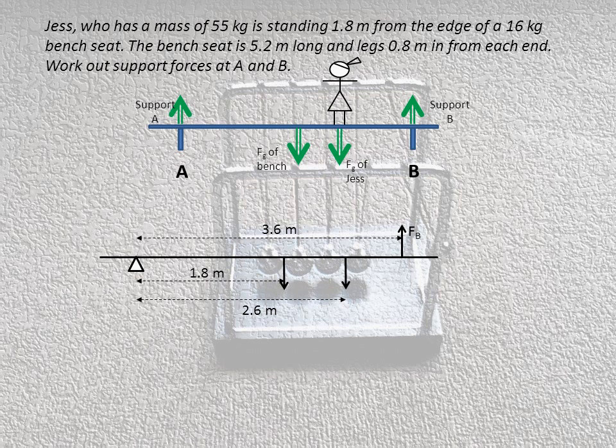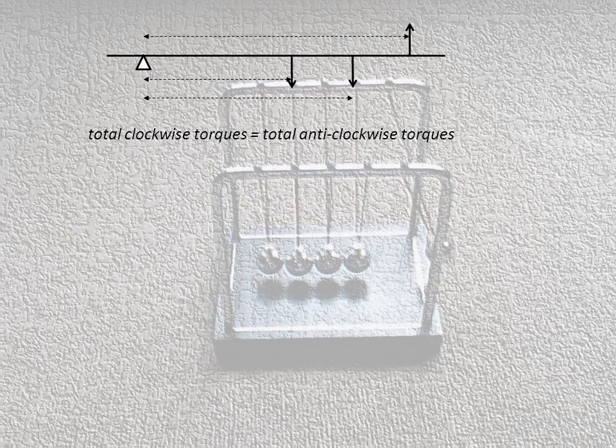Now I'm going to put the forces in here. Force B I don't know, so I'm just going to label it as force B. The force of Jess, of course, is worked out by the force of gravity. That's her mass times acceleration due to gravity, which is 9.8. So 55 times 9.8 equals 529. And same again with the bench, 16 kilograms times 9.8 equals 157 newtons. So now I have all of this information here on my diagram.